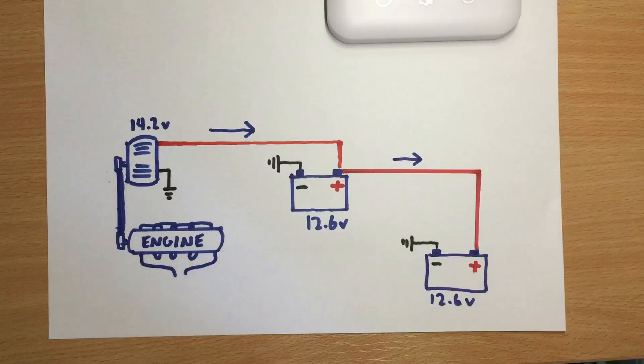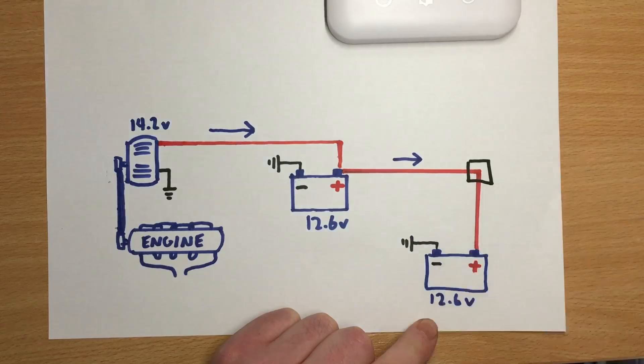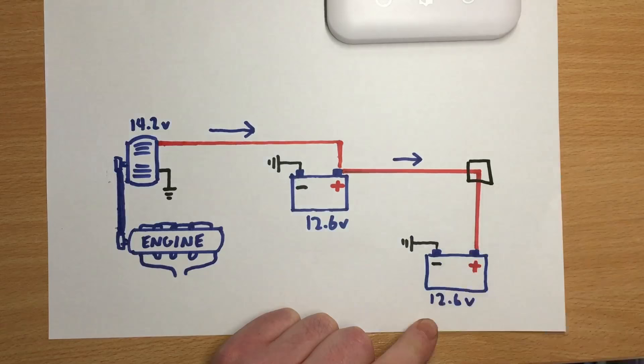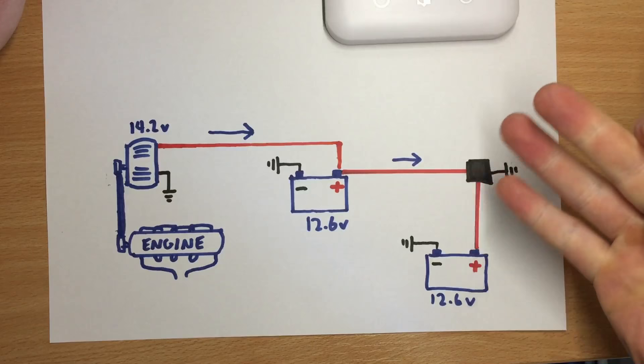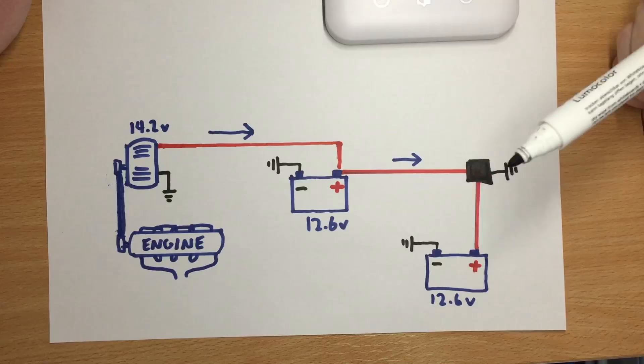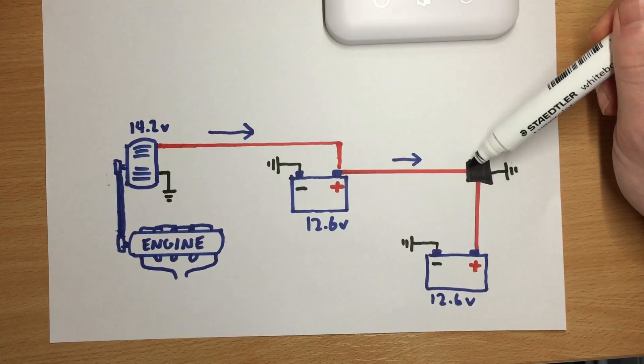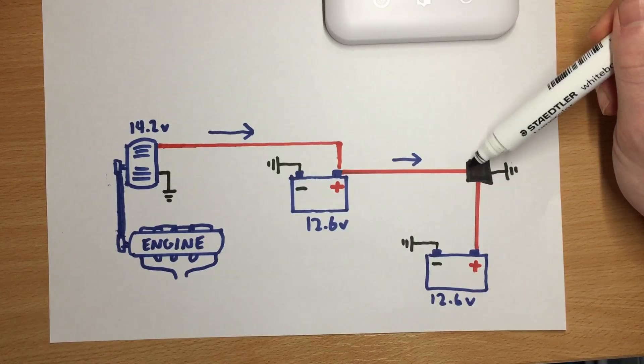And that's where we add a split charge relay here. Essentially you could just put a manual switch in here if you wanted to. That would mean every time you start up your engine you could switch that on manually and that means that both batteries are being charged. When you switch your engine off, just flick that switch off and that means you can use this battery at your leisure without worrying about flattening that battery. Now there are different types of split charge relays you can install here which saves you having to manually switch that.